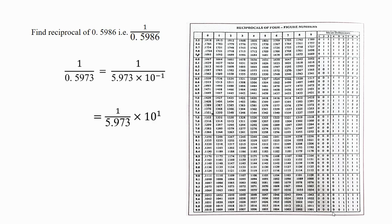Next, I transfer 10 raised to minus 1 to the numerator, which becomes 10 raised to plus 1. Let's find the reciprocal value. For that I consider 5.9 in the very first column. Along the 5.9 row I observe the value under the 7th column. Then I subtract the mean difference along the same row under the 3rd column. So the value is 0.1674 into 10 raised to 1. When I multiply by 10 raised to 1, the value is 1.674.